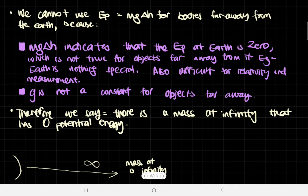Why? Because there's just nothing special about Earth. If we want to talk about the energy between the sun and the moon, or the energy difference between the sun and a black hole, we would all have to relate it to the Earth. And that's obviously very inconvenient because Earth is just another planet.